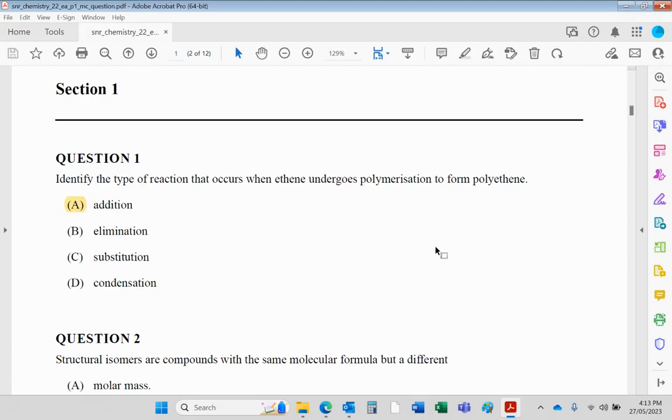Question one: identify the type of reaction that occurs when ethene undergoes polymerization to form polyethene. Ethene is an alkene. All alkenes obviously have double bonds. When they join together, the double bond opens and they simply add together. There's no second product. This is addition.